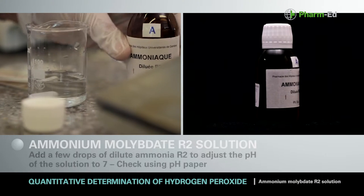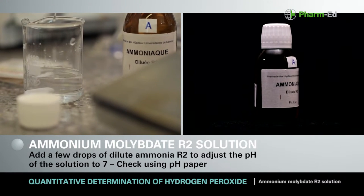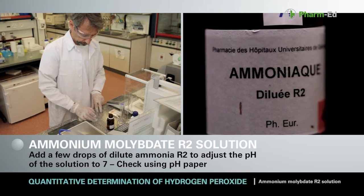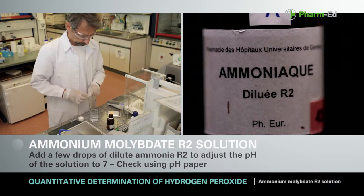Add a few drops of dilute ammonia R2 to adjust the pH of the solution to 7. Check it using pH paper.